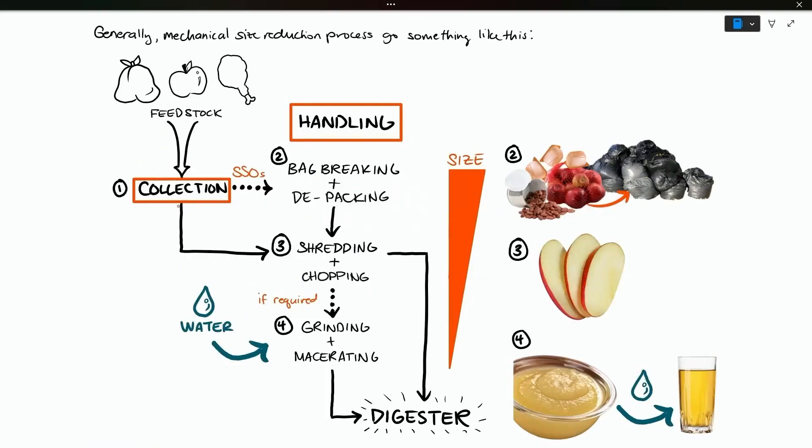Generally, the mechanical size reduction process goes something like this. Your waste, which is called the feedstock, is collected. And then depending on what you've got and where you live, the collection process could look like piling bags of waste up somewhere before it goes into handling, or it can go straight into breaking it down and the handling stage. If you got source separated organics or SSOs, this will go into a bag breaking or de-packing step so that the organic waste can be separated from its packaging.